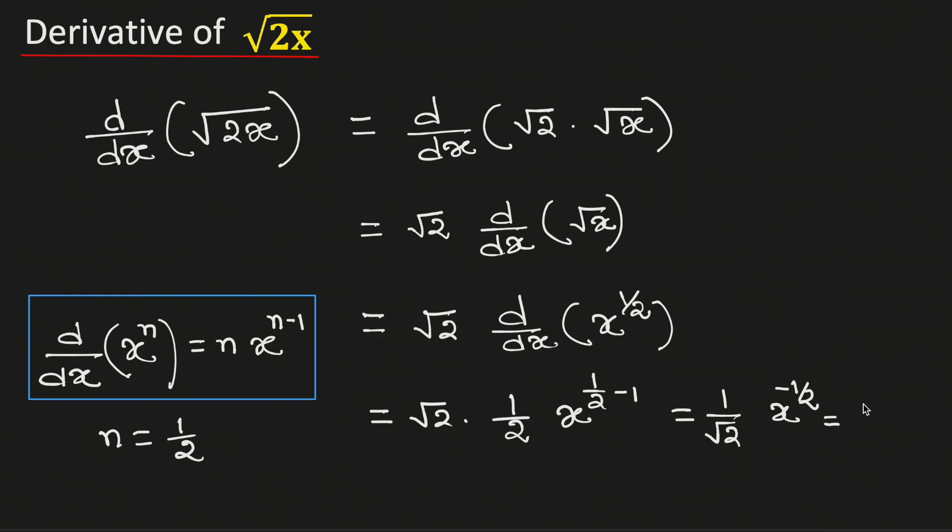And simplifying we get one over square root of 2x. Therefore the derivative of square root of 2x is equal to one over square root of 2x, and this is our final answer.